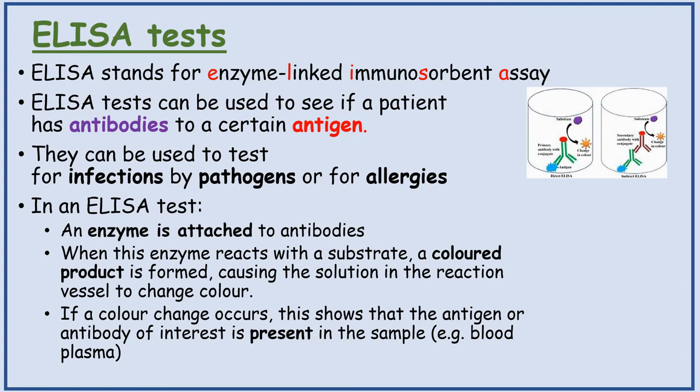Just to recap: ELISA stands for Enzyme-Linked Immunosorbent Assay. ELISA tests can be used to see if a patient has antibodies to a certain antigen, and can be used to test for infections by pathogens or for allergies. In an ELISA test, an enzyme is attached to the antibodies. When this enzyme reacts with a substrate, a coloured product is formed, causing the solution in the reaction vessel to change colour. If a colour change occurs, this shows that the antigen or antibody of interest is present in the sample.